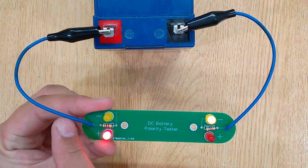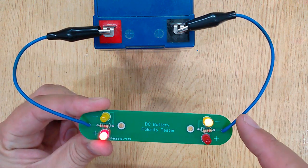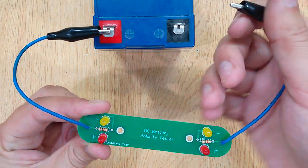You can see this one with the red LED is the positive terminal, and this one with the yellow LED is the negative terminal.